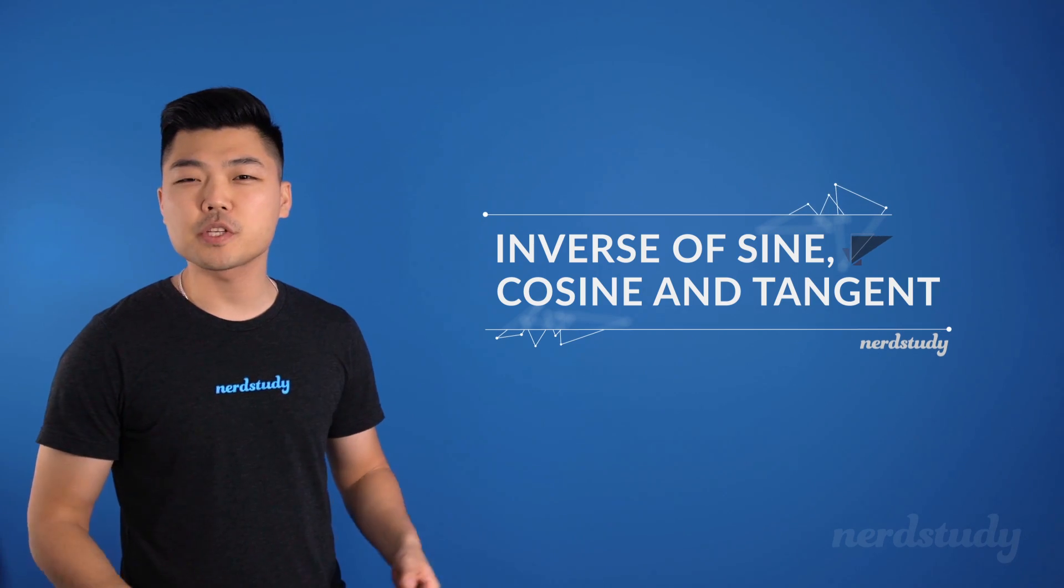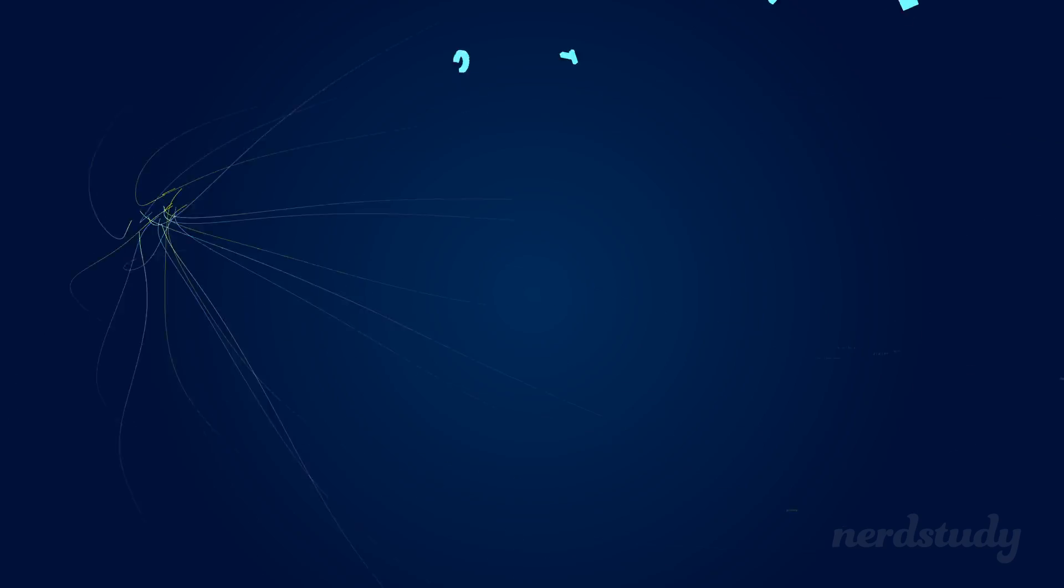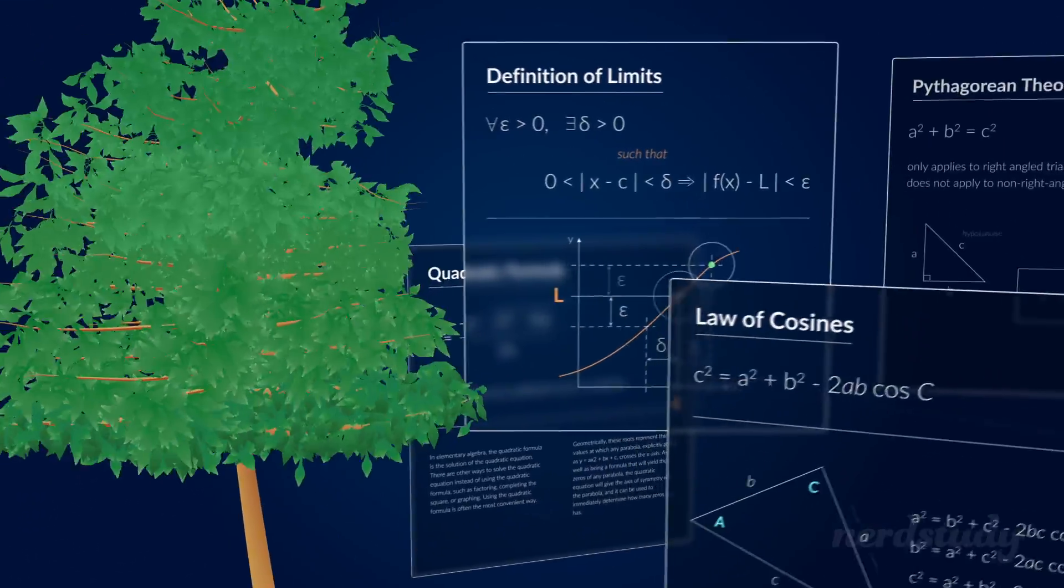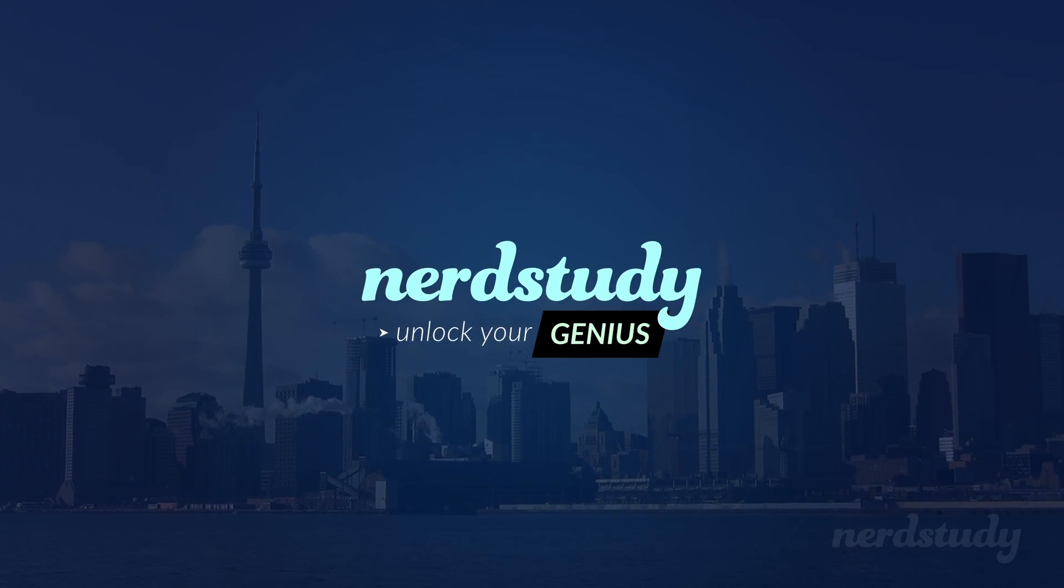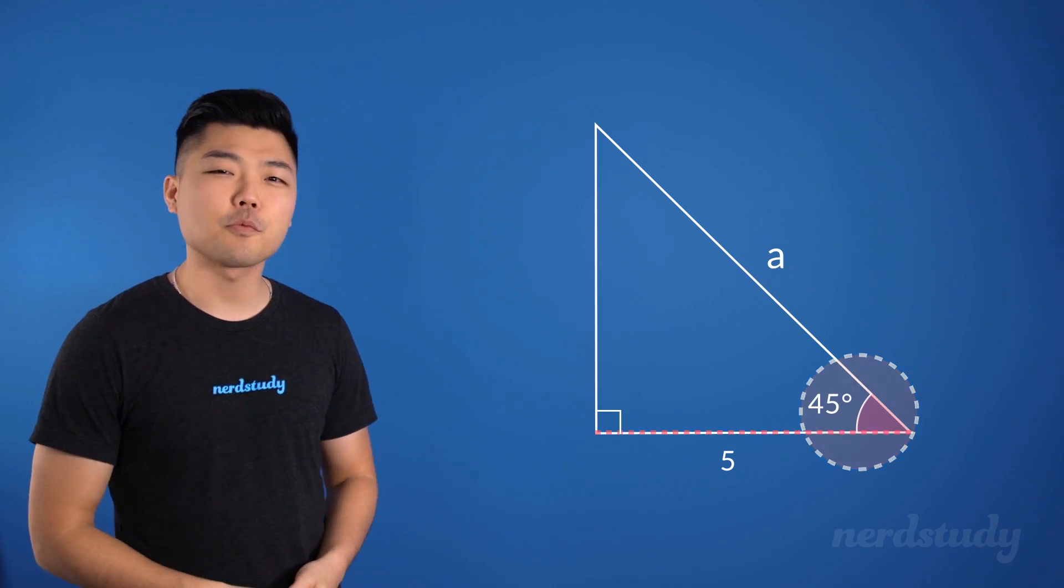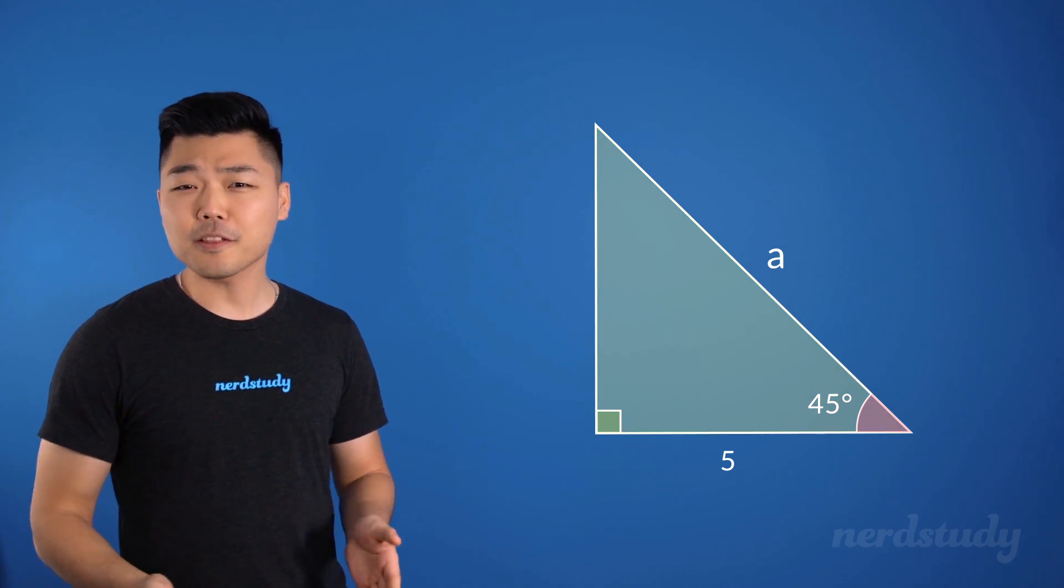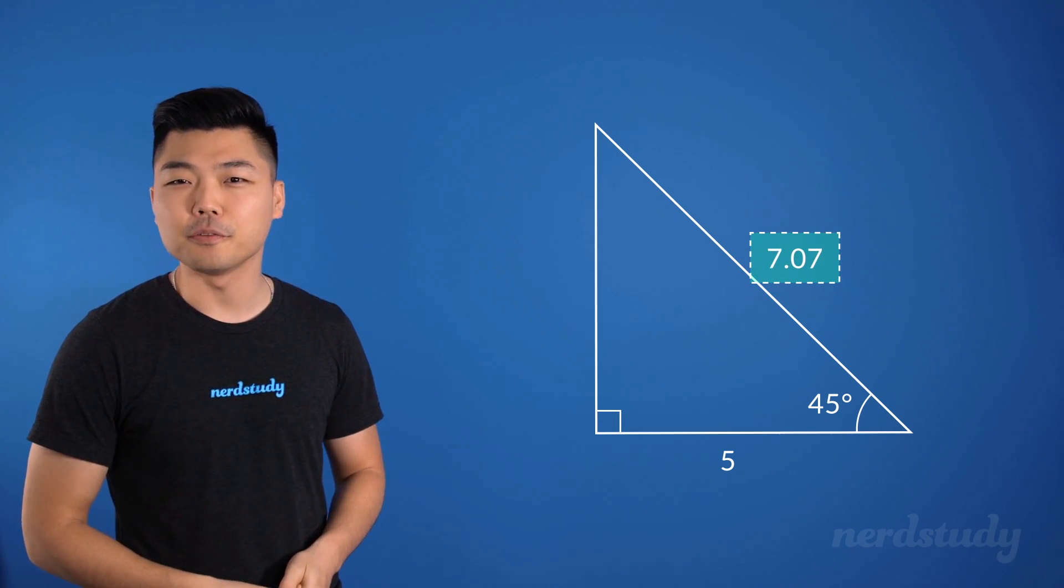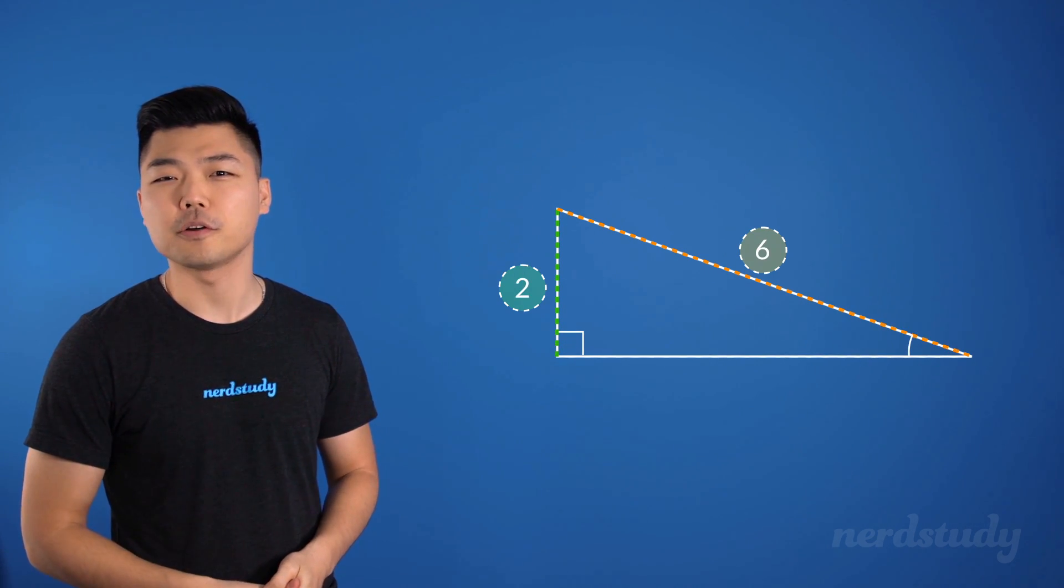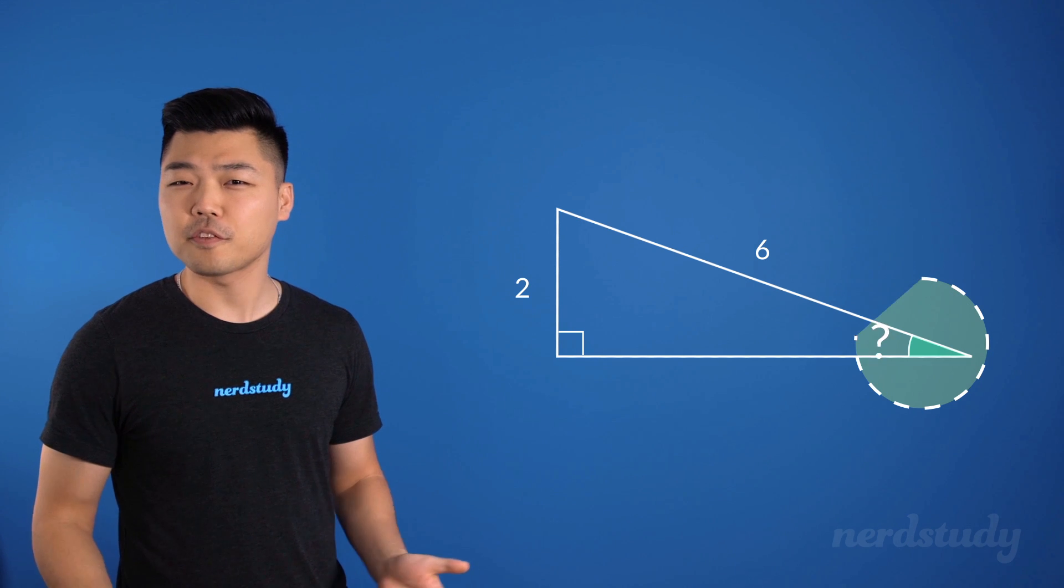It is now time for us to learn about the inverse of the sine, cosine, and tangent functions. So if you watched our lesson on the sine, cosine, and tangent functions, then you'll remember that we learned that if we have an angle and a side length within a right-angled triangle, then we can get the length of another side of the same triangle. But what if we had the value for two side lengths of the right triangle instead? Can we find the value of an angle?